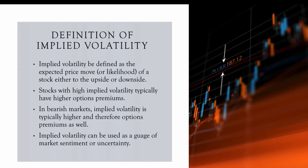Implied volatility can be used as a gauge of market sentiment or uncertainty. In a bullish market it's going to be a lot less than in a bearish market. In a bearish market, stocks are going down and people are fearful — the VIX or volatility index will spike up, which also increases implied volatility. They say stocks take the elevator on the way down but the stairs on the way up.